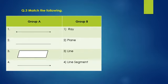Question 3. Match the following. Answer. First, it is a line. Second, it is a line segment. Third, it is a plane. Fourth, it is a ray.